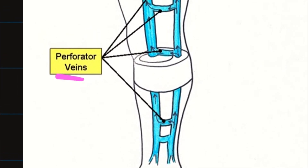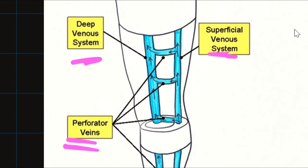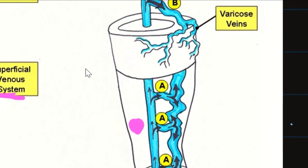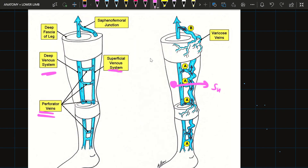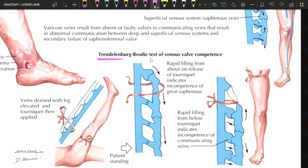In this diagram, we can see the perforator veins — their conventional direction of flow is from the superficial into the deep venous system. But in varicose veins, blood flows from the deep venous system into the superficial venous system, showing incompetency of the valves in the perforators. Another diagram demonstrates the Trendelenburg test: the limb is raised, pressure is applied on the varicose veins to push blood proximally, then pressure is applied at the saphenofemoral junction and the patient is asked to stand up quickly.